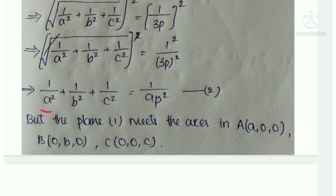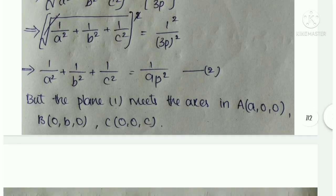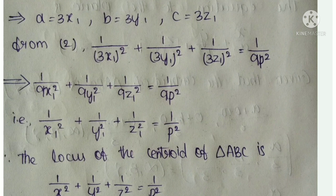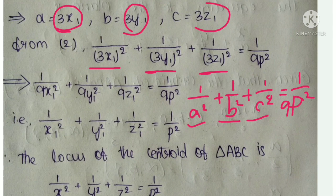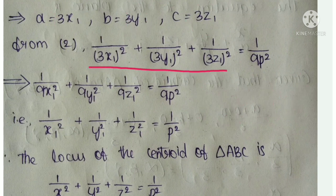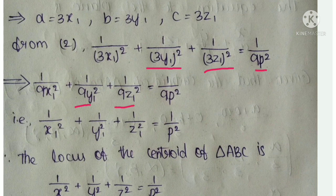Next, we substitute the a, b, c values into equation number 2. From equation (2): 1/a² + 1/b² + 1/c² = 1/9p². Substituting a = 3x₁, b = 3y₁, c = 3z₁ gives: 1/(3x₁)² + 1/(3y₁)² + 1/(3z₁)² = 1/9p².